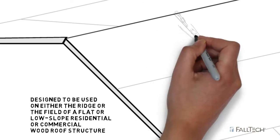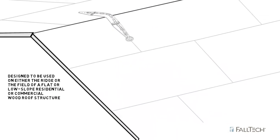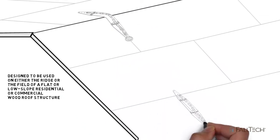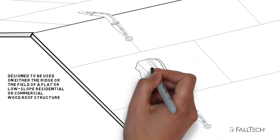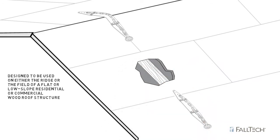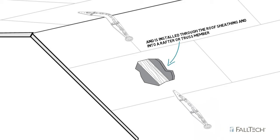This anchor is designed to be used on the ridge line or the field of pitched or flat residential or commercial wood roof structures. It's installed through the sheathing substrate and into a rafter or truss member.